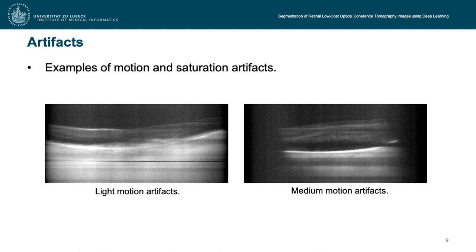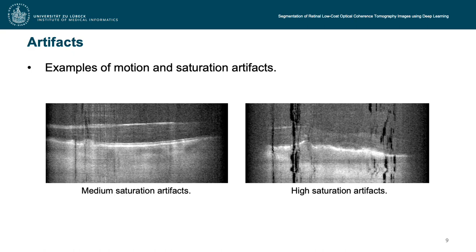Two prominent artifact types are moving and saturation artifacts. Axial movements of the head during the scanning process lead to the deletion of entire slices, resulting in light to severe stripes in the scan. Additionally, image areas above and below such stripes may be shifted against each other. Furthermore, saturation artifacts can considerably disturb the readability of the scan, appearing as vertical streaks that in the worst case manifest as prominent black stripes.